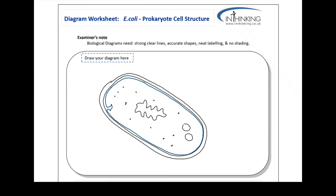The flagella is the last big structure. It comes from the plasma membrane — the cell membrane — and through the cell wall to the outside, and it's quite long. Then there are shorter pili, which also go through the cell wall to the membrane.